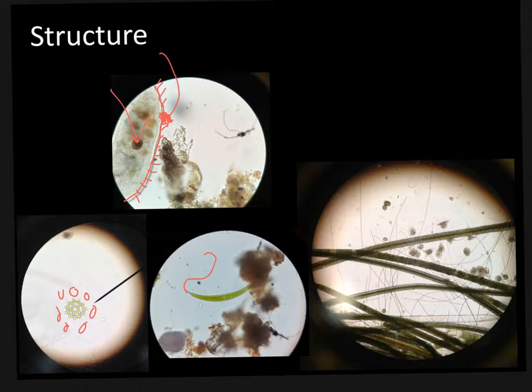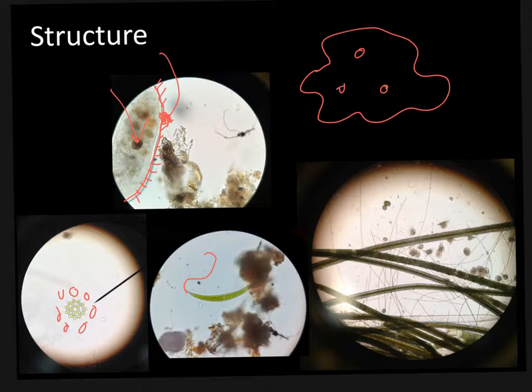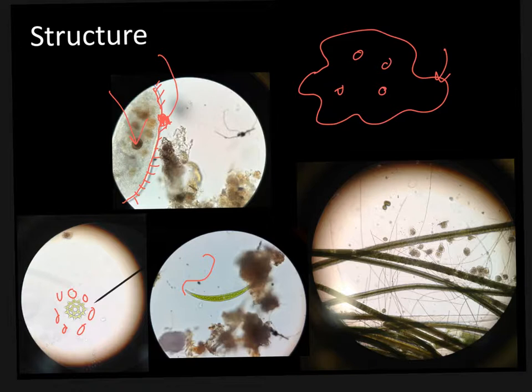If we look at our amoeba, it's just a blob with some organelles. Right here you have the pseudopodia. Basically, what it's going to do is help move the organism through the water, usually on a substrate — so if it's on a leaf or on the ground. It's going to send out these arm-like projections to help it move across the ground, and it's also going to help it eat.